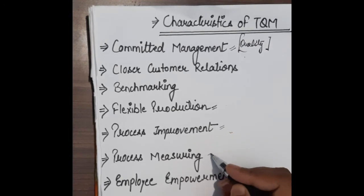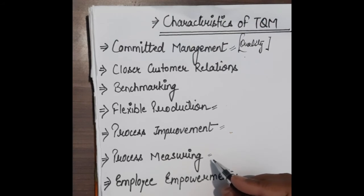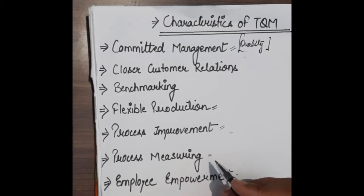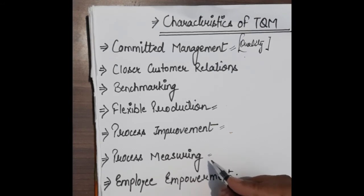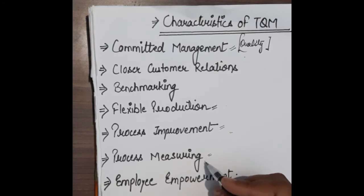Next is process measuring. When we talk about process improvement, we also talk about process measuring. Measuring means you have to evaluate whether you have met the standards and the benchmark you have set. You have to check whether that process has met the benchmark or not. If not, you will need to change the process. Basically, we measure whether whatever performance is up to the mark or not.